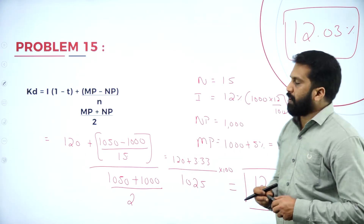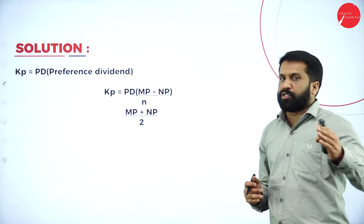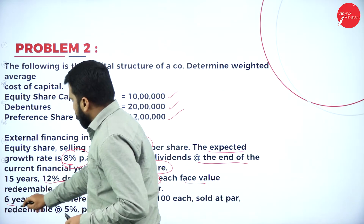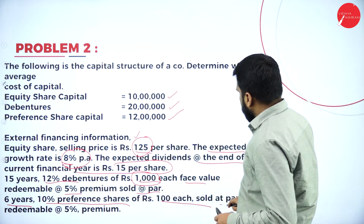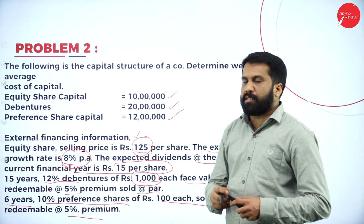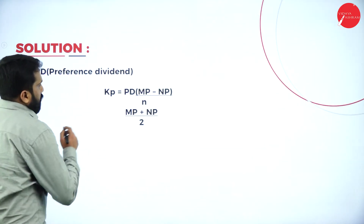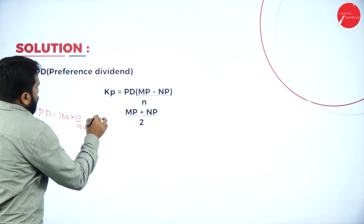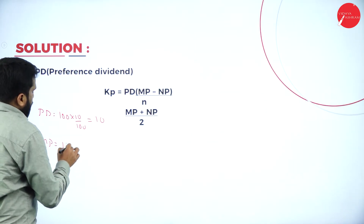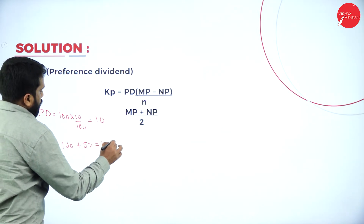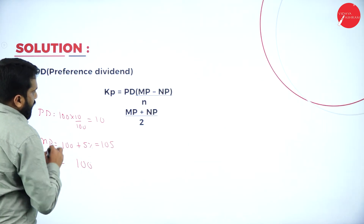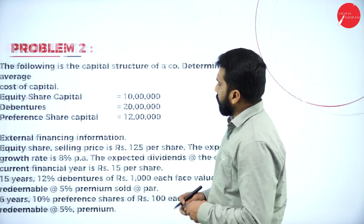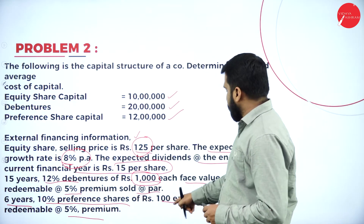We will go for cost of preference shares. Going back to the question for the information. It is a 10% preference share of rupees 100 each, number of years 6, sold at par, redeemable at 5% premium — same structure as before. Preference dividend: 100 into 10% equals 10. Maturity price: 100 plus 5% equals 105. Net proceeds is the par value 100. Number of years is 6.